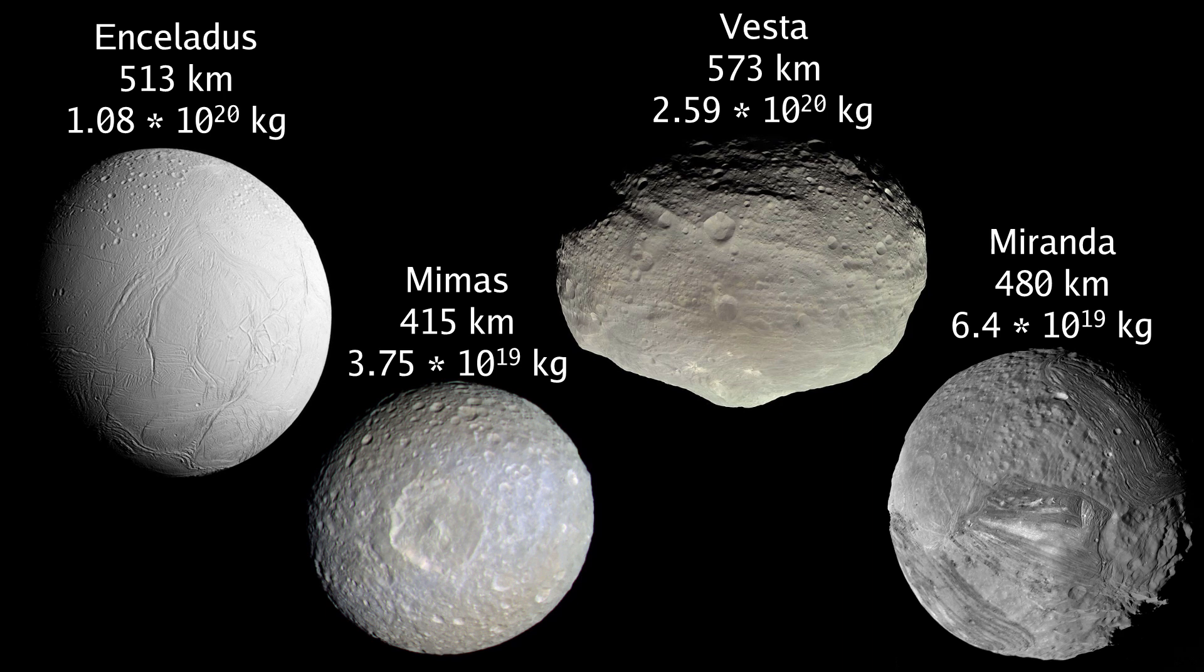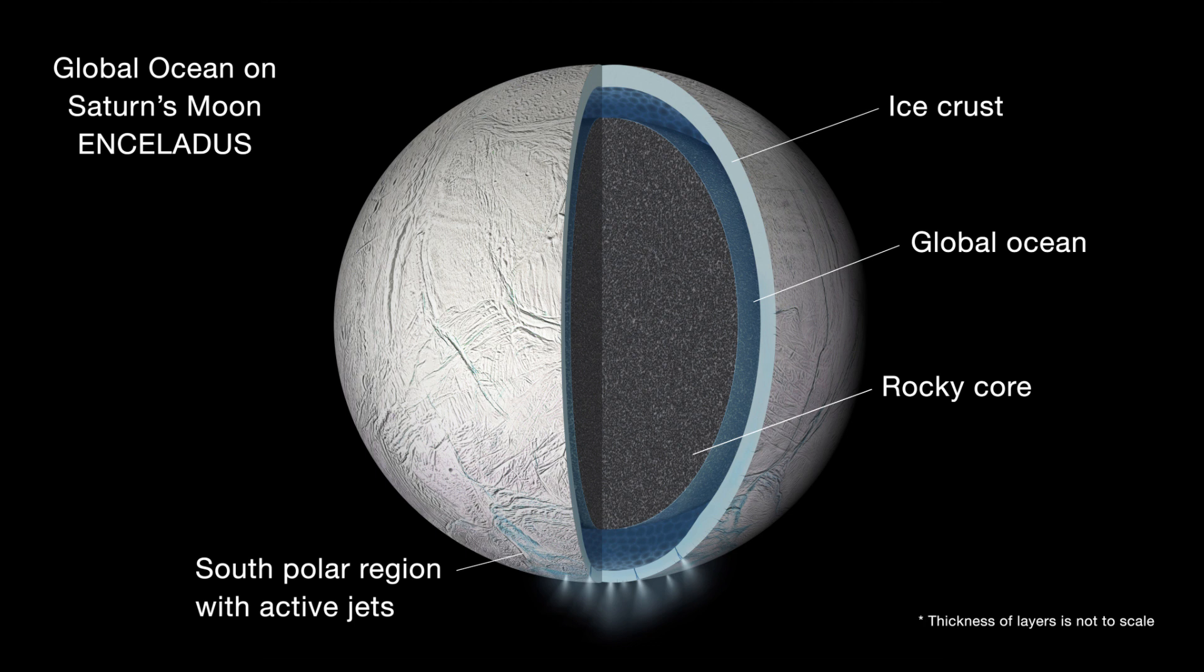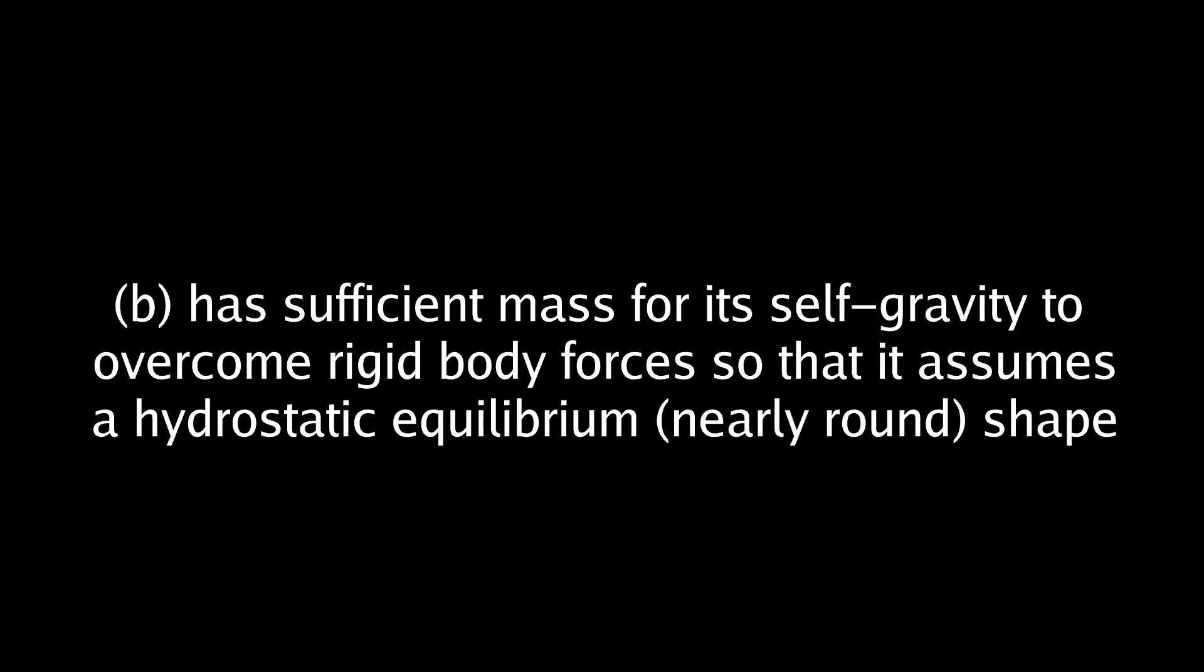Mimas, Miranda, and Enceladus are all close to round, despite being less massive than the asteroid Vesta, as ice is less rigid than rock. Enceladus does have a subsurface ocean, so it is debatable whether you can say it overcame rigid body forces, given water is not rigid. But Jupiter is largely made of gas, and that is not rigid at all. Did Jupiter overcome rigid body forces? Due to the vagueness of the criterion, I think we should scrap the hydrostatic equilibrium criterion too. But without that, we don't have a definition for a planet.